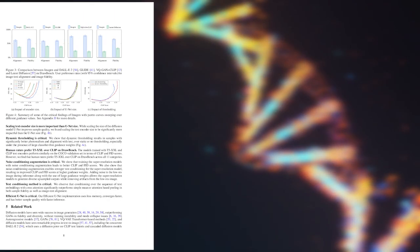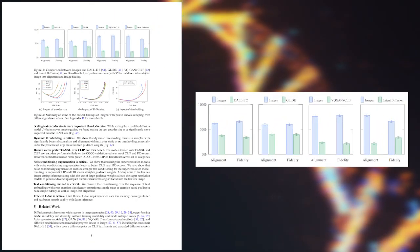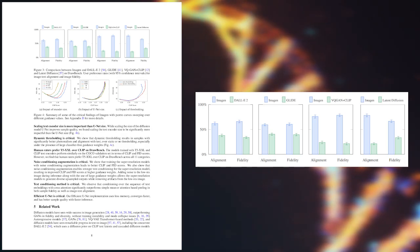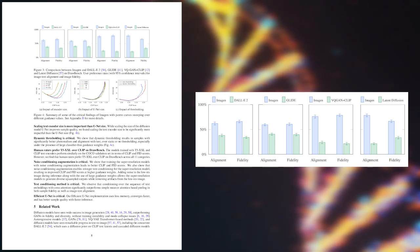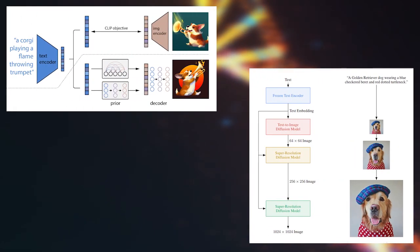When the generated images were evaluated by human subjects for image fidelity and text-to-image alignment, evaluators showed a preference for the images generated by Imagen for both categories, proving the higher image generation capabilities of the system. Although being the best-performing image generator, Imagen shows a much more simplistic system design than DALL-E2.